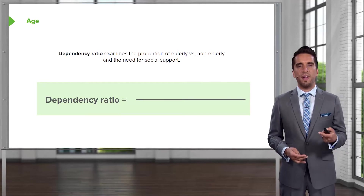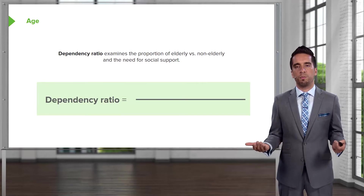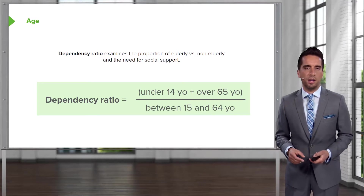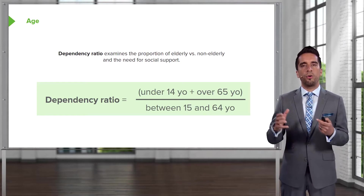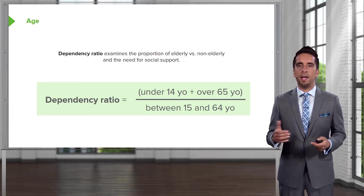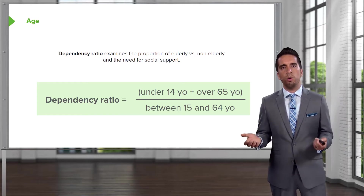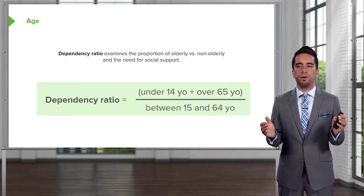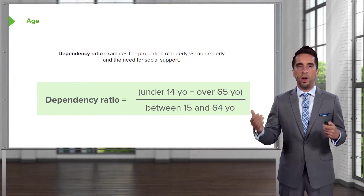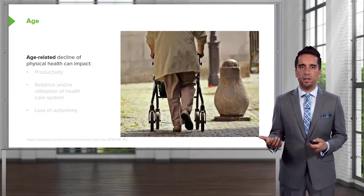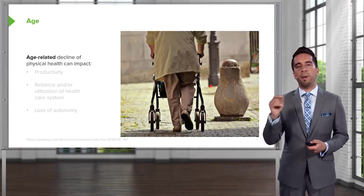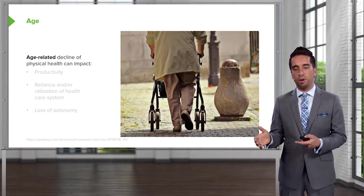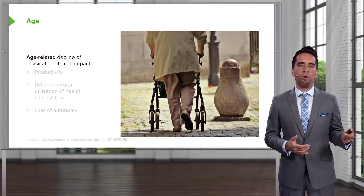The dependency ratio examines the proportion of elderly versus non-elderly and therefore the need for social support. To calculate it, you look at the number of individuals under 14 years old plus those over 65, and divide that by the number of individuals aged 15 to 64. We've taken those who need help — the very young and the elderly — versus contributing adults. This ratio allows us to compare over time and across cities, countries, and provinces to understand how much social support will actually be needed.